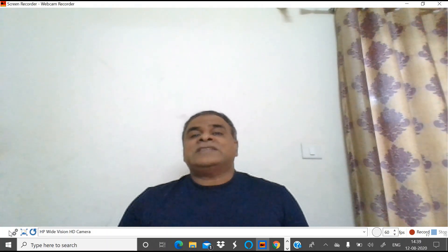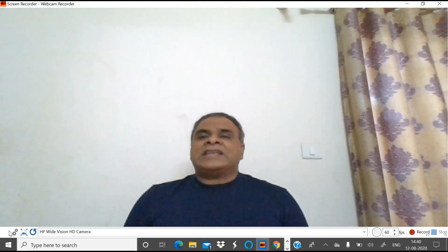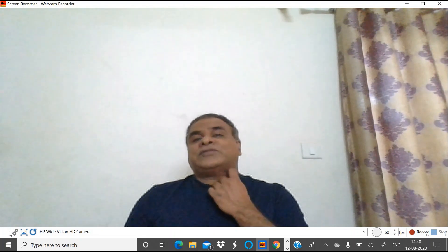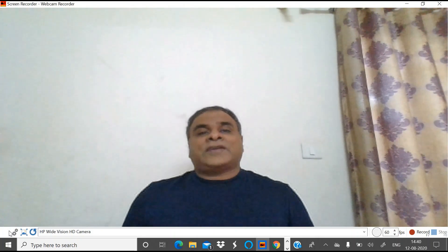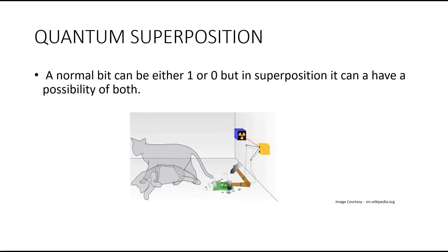In Schrödinger's imaginary experiment, you place a cat in a box with a tiny bit of radioactive substance. When the radioactive substance decays, it triggers a Geiger counter which causes a poison or explosion to be released that kills the cat. The cat ends up both dead and alive at the same time.